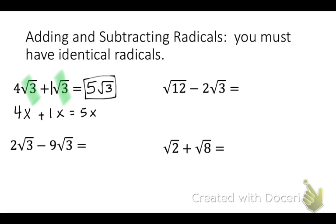Next we have 2 square root 3 minus 9 square root 3. The square root 3's are the same, so I can just take 2 minus 9. 2 minus 9 is negative 7, so the answer is negative 7 square root 3.